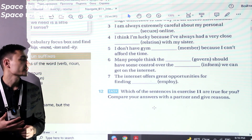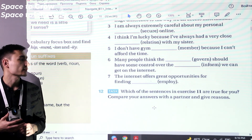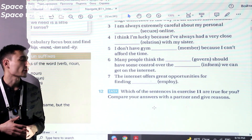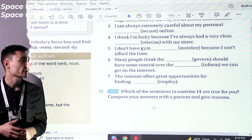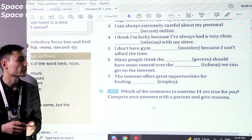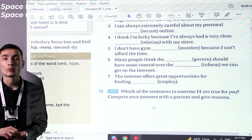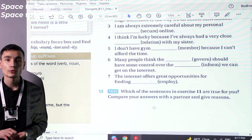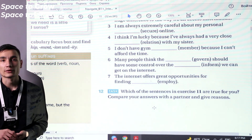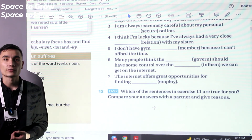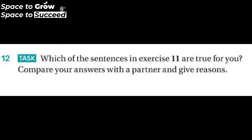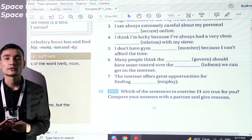Exercise 12. Which of the sentences in exercise 11 are true for you? Compare your answers with a partner and give reasons. Look at the statements in exercise 11, find the ones that are true for you, compare your answers with your partner, and try to give reasons in a written form. That's the end of our lesson.